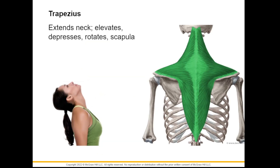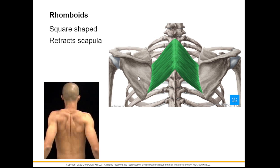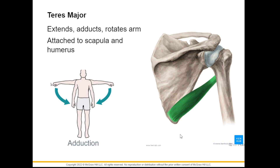Let's now go to the muscles of the back. We have the trapezius, which forms your broad shoulders — it appears diamond in shape and it allows us to extend the neck. We also have the levator scapulae which, from the name itself, elevates the scapula. The rhomboids are called rhomboid because they are square in shape; they allow us to retract our scapula, meaning to move it backwards. We also have the teres major which allows us to extend, adduct, and rotate the arm.